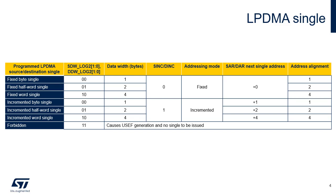Note that the width is programmed independently for source and destination transfers. The addressing mode after each data of an LPDMA single is defined by the SINC and DINC bits of the LPDMA CXTR1 register, either a fixed addressing or an incremented addressing with contiguous data. The start and next addresses of an LPDMA source and destination single must be aligned with the respective data width.